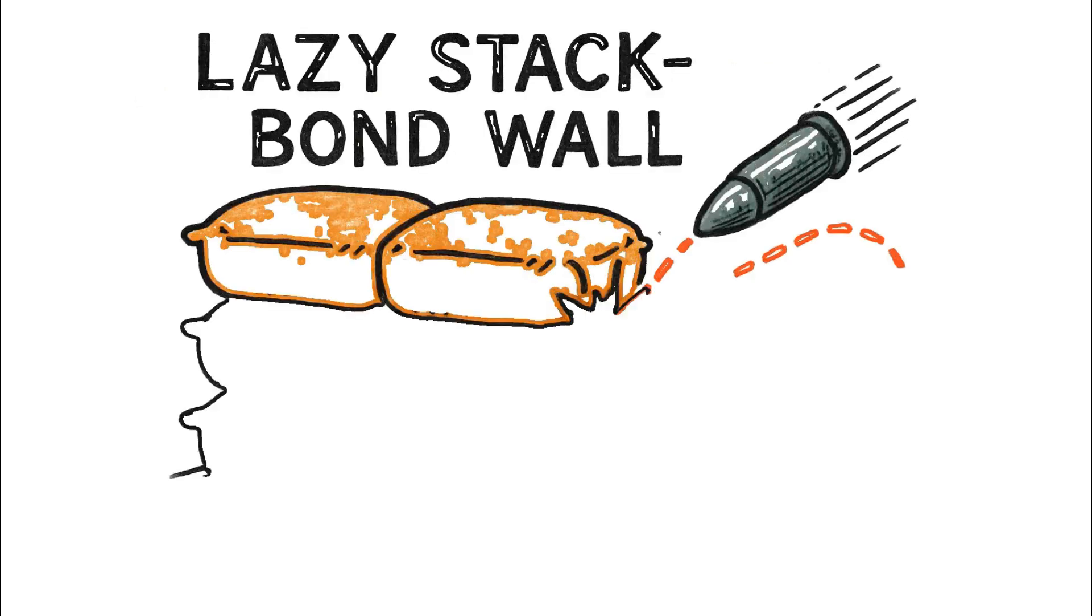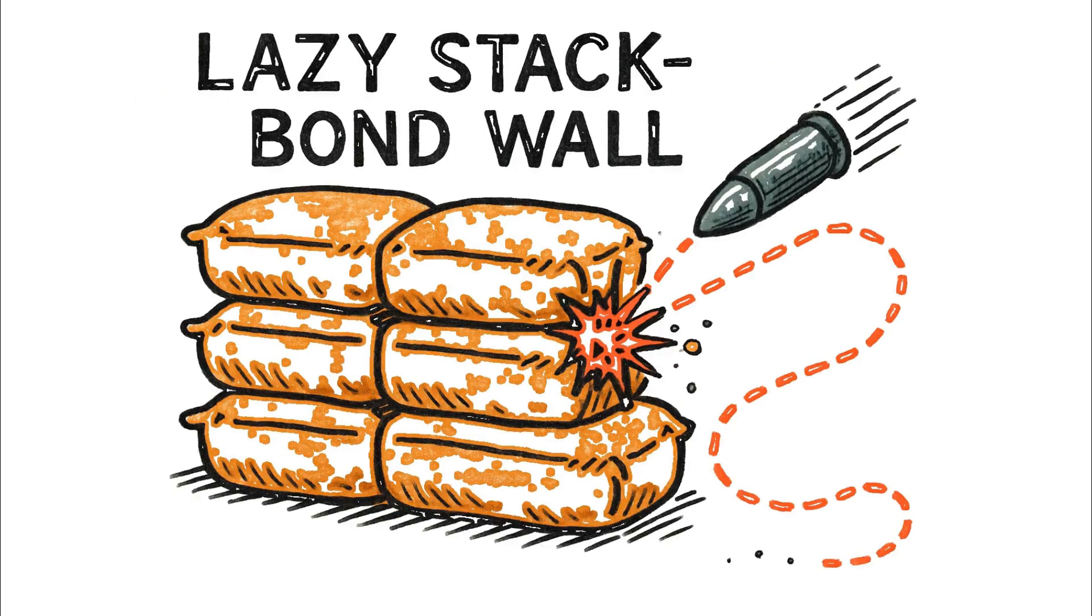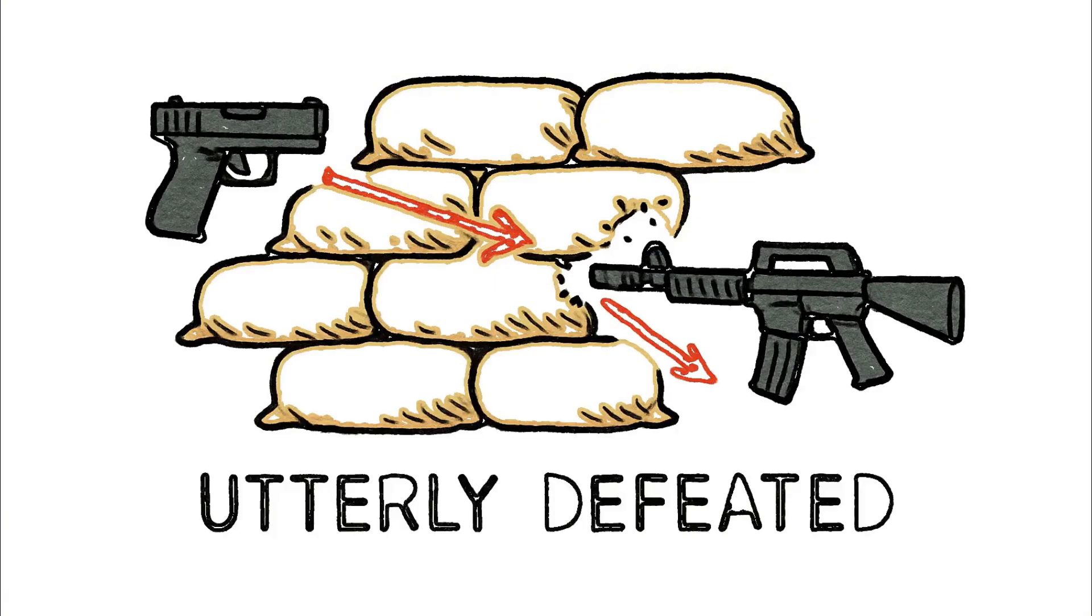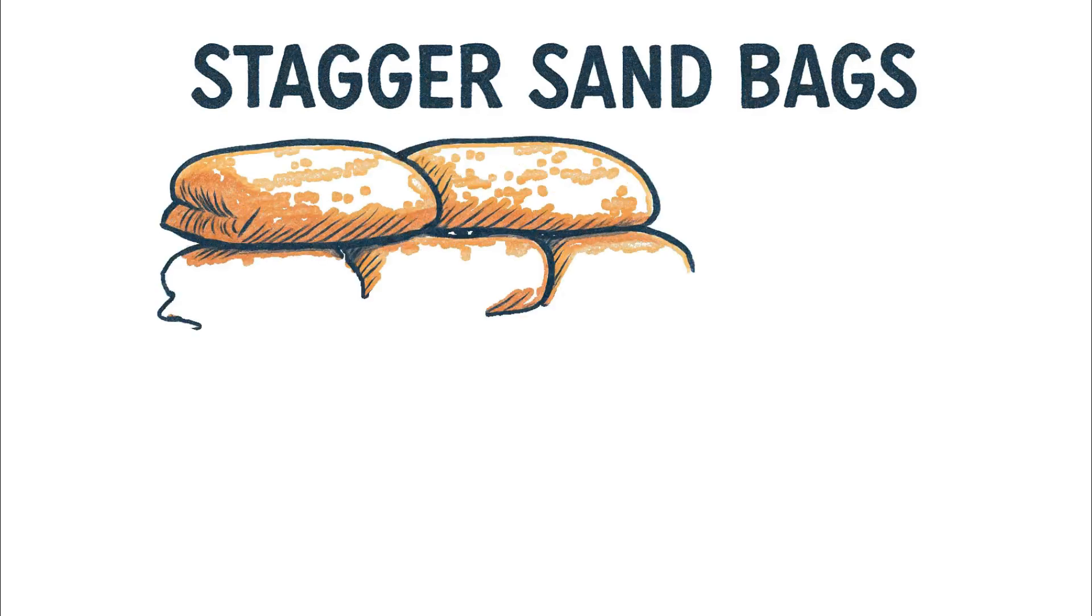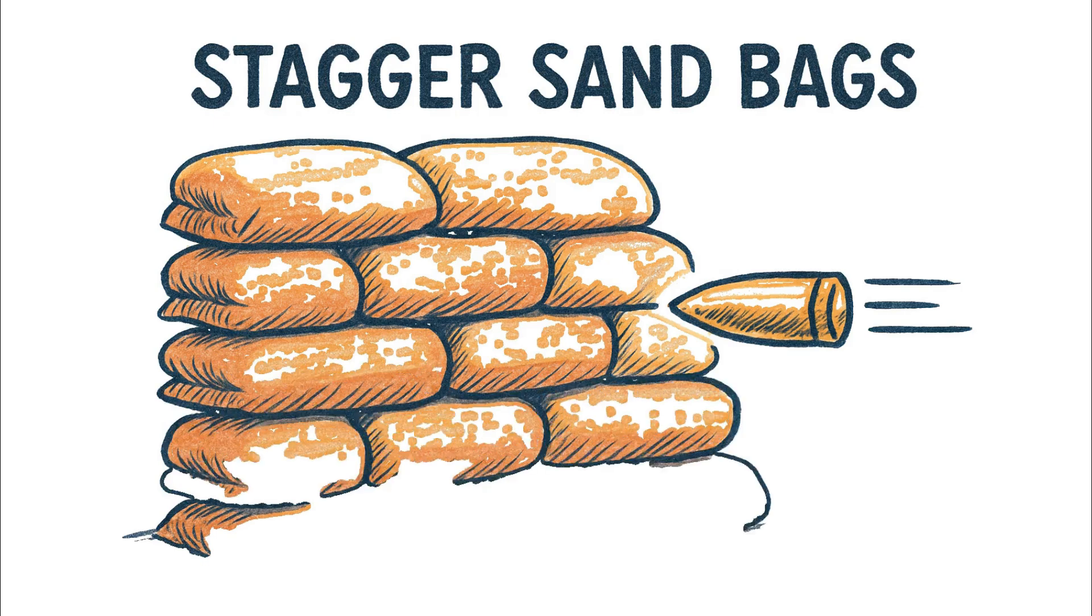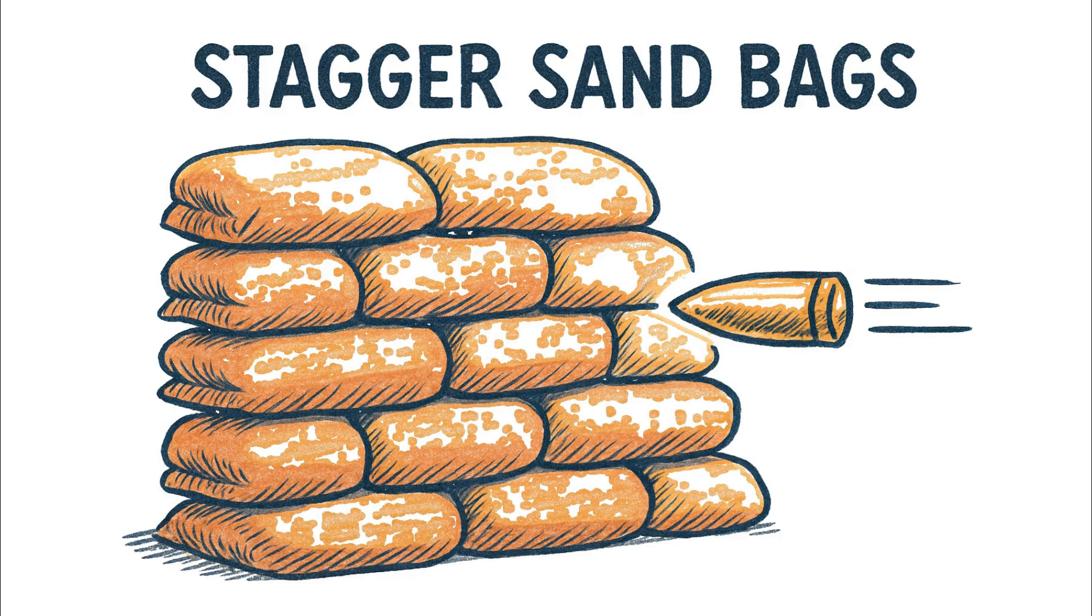Building a lazy stack bond wall gives bullets a roadmap to failure. It fails against handguns and gets utterly defeated by common rifle rounds, while the fix is simple. Stagger the bags in a running bond like a brick layer, because that one change forces any incoming round to fight through the maximum amount of sand, turning a weak screen into a true barrier.